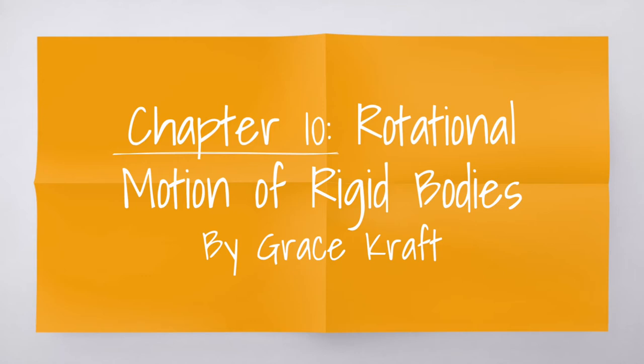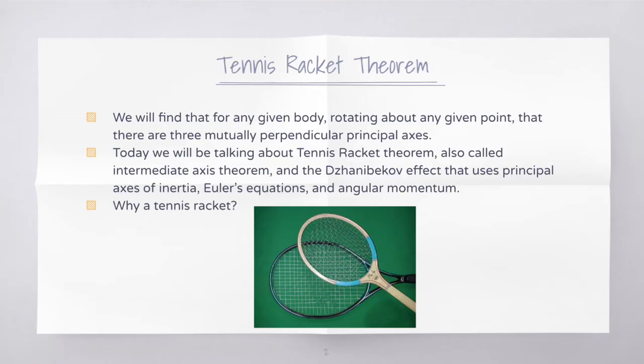In class so far, we have done many problems covering the rotation of a moving object around a singular axis, typically the z-axis. Whatever axis a body is rotating about, we can often choose to call it the z-axis to help make the problem easier to understand. But this doesn't tell the whole story according to chapter 10.